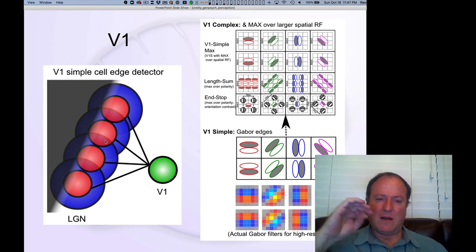So that essentially, in this case, you're getting more net excitation from the on-center, and then this darker part is not activating that surround as much, and so you get this net activity. So we can actually take these things and represent them mathematically as something called the Gabor function.